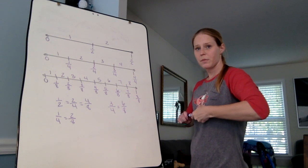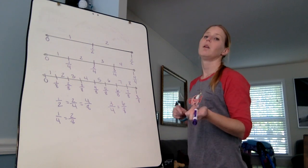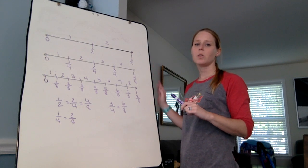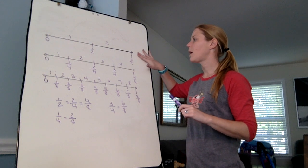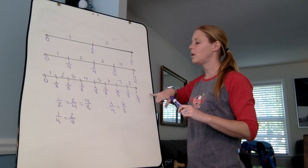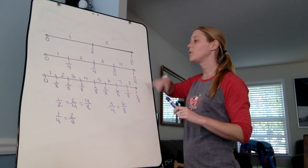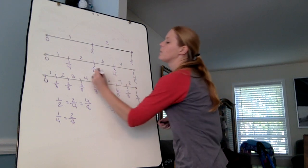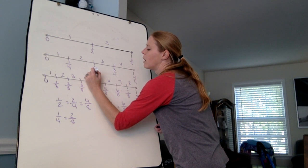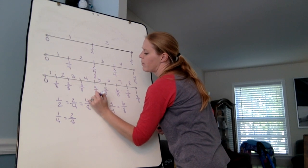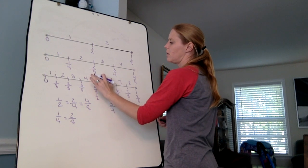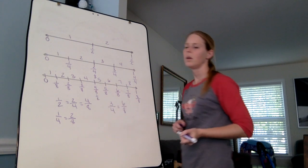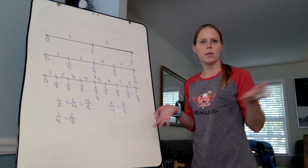So your job is to, on your worksheet, go ahead and take the first three lines, the first three number lines, and you're going to do just like we did here. Label your halves, your fourths, and your eighths. If you want, you can put your equivalent fractions on there too. So like I would do four eighths right here. Or I would say this is one half. Or I could say, instead of writing that as four eighths, I could say this is one half too. Right? Try it. Give yourself a challenge.